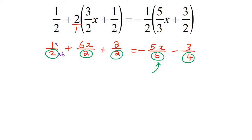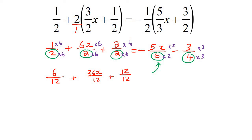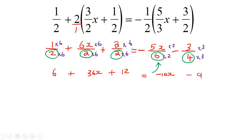So we're going to multiply this one by 6, this one by 6, this by 6, that by 6, this by 6, that by 6, this one by 2, by 2, by 3, and by 3. What we now end up with is 6 over 12, 36x over 12, 12 over 12, equals negative 10x over 12, and then minus 9 over 12. We already learned in the previous lesson that if it's an equation and the denominators are all the same, we don't have to show them — so I took away the denominators.